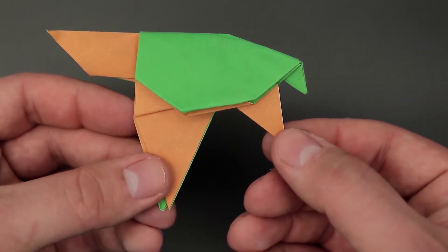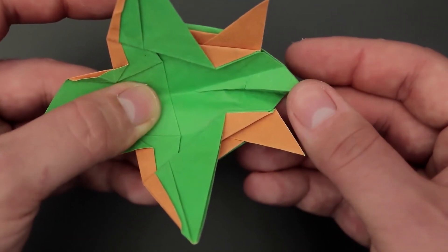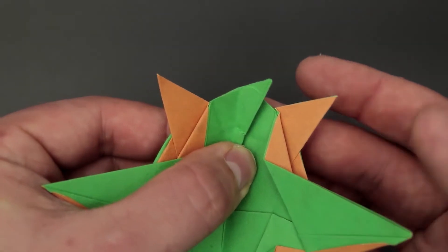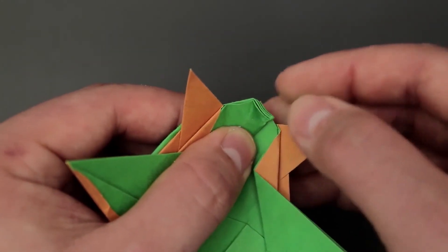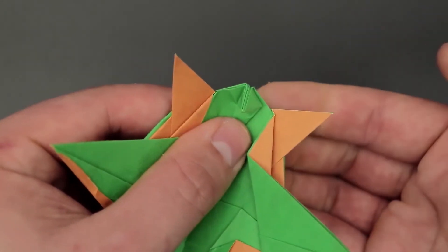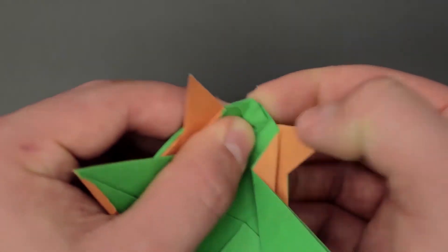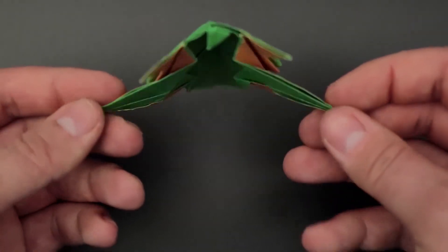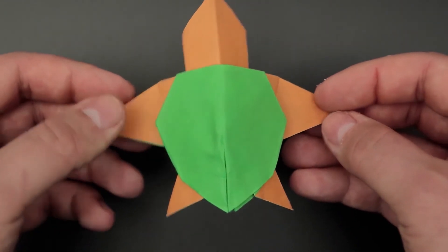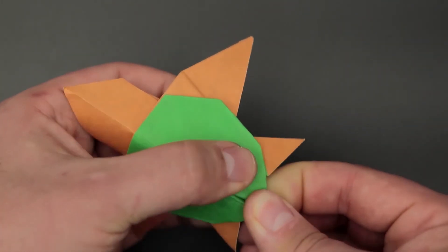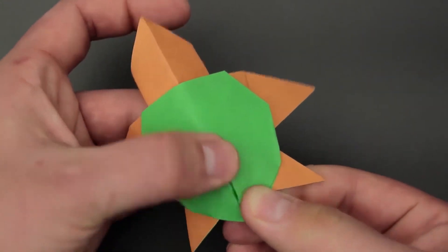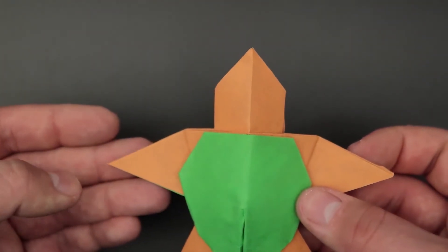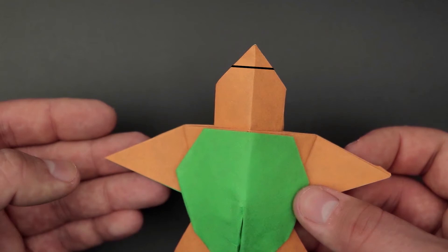In the end we open one more time, and fold the remaining corner inside. Let's go back to the other side, fix what is necessary. And finally, fold the corner up here, in the head part.